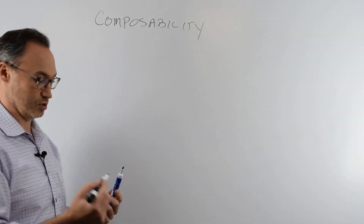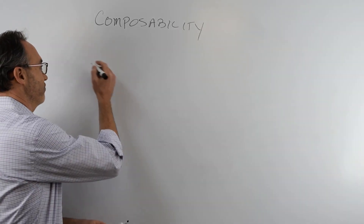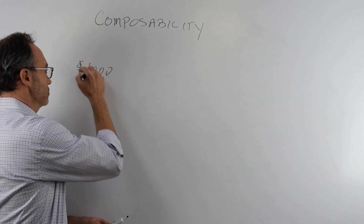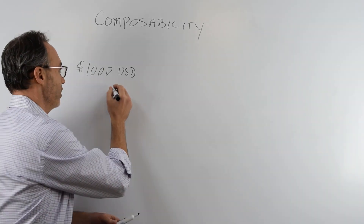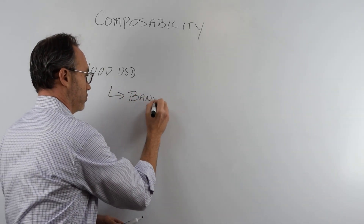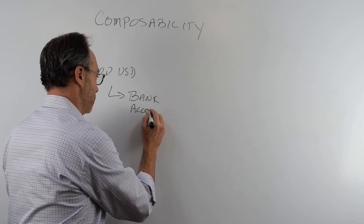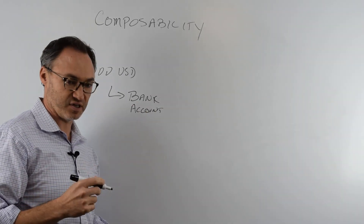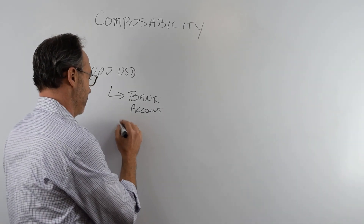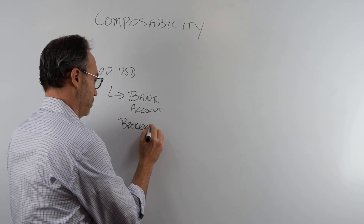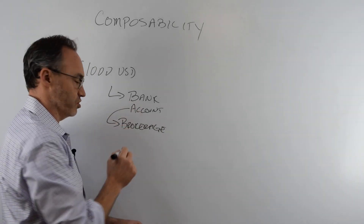In the traditional world, composability is not that easy. Say I have a thousand U.S. dollars sitting in my pocket. Someone gives me a check — I need to put that into the bank. To open a bank account, the bank might ask me all sorts of information. Now I have a bank account, and let's say I want to take that thousand dollars and invest it in some sort of fund or security. Now I have to get a brokerage account and move the money from the bank account to the brokerage account.